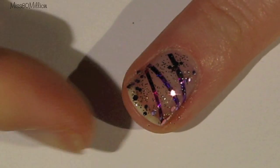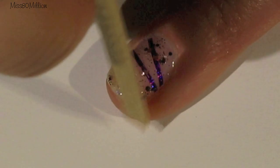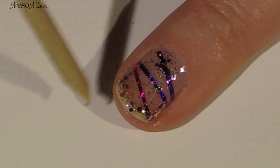If you want to add a top coat on top of this as well, you certainly can. It will help secure your glitter down as well as your nail tape. But I'm just going to leave it like this without an additional layer of top coat.